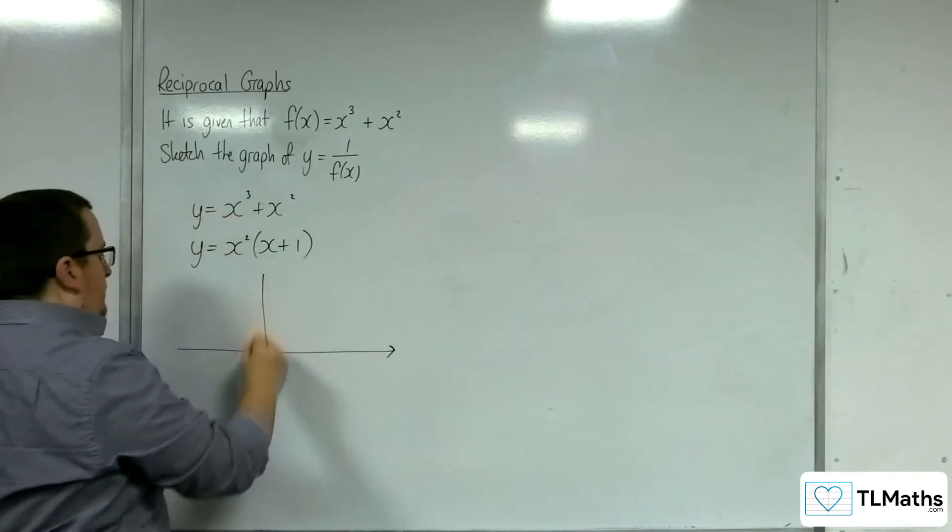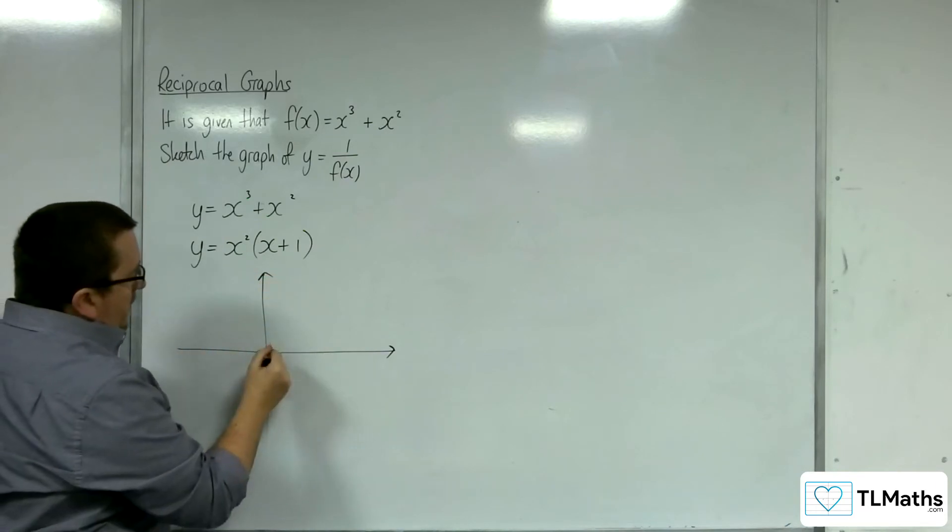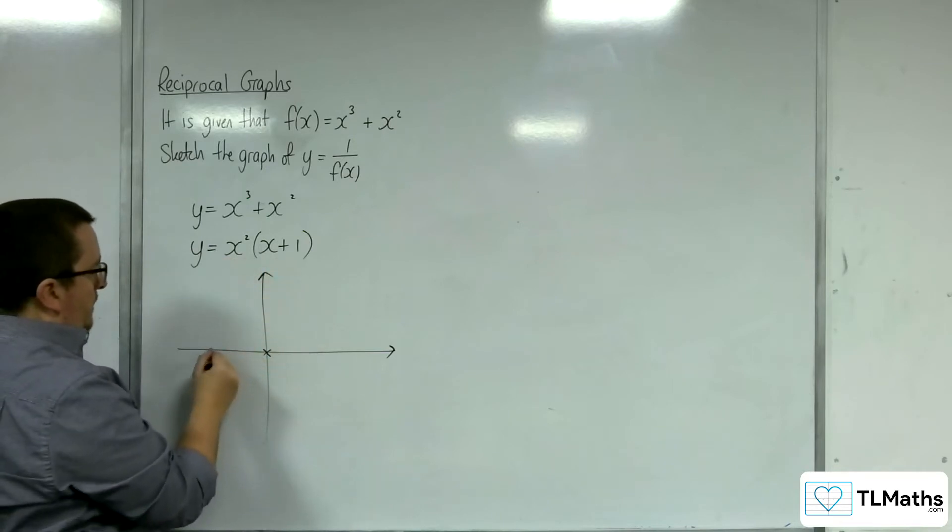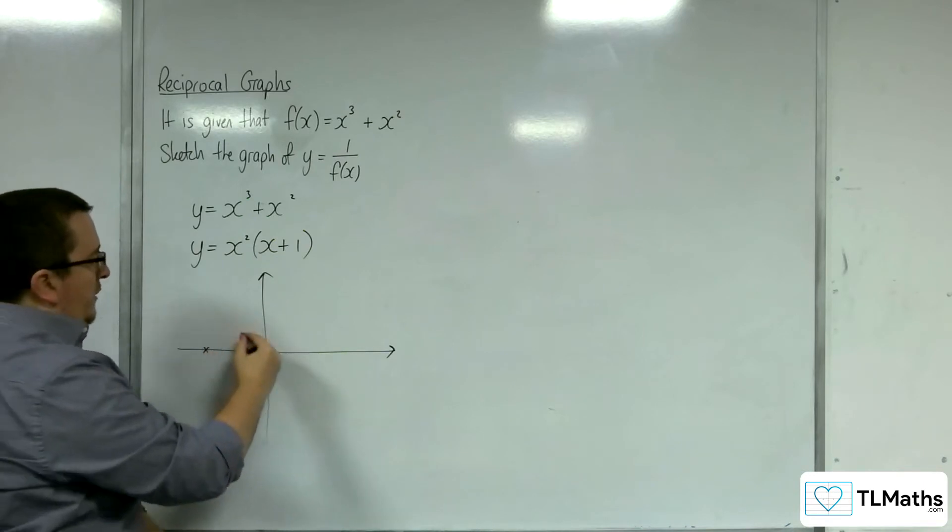OK, so this is a cubic curve that is crossing the x-axis at 0 and minus 1. It's a positive x cubed, so it's starting down at the bottom left and working its way to the top right.